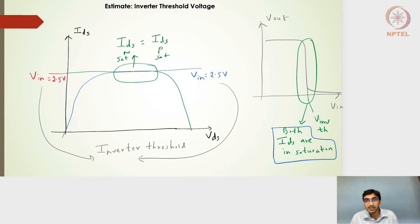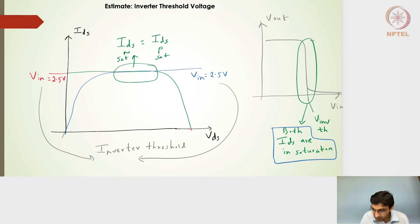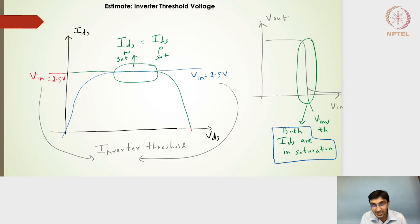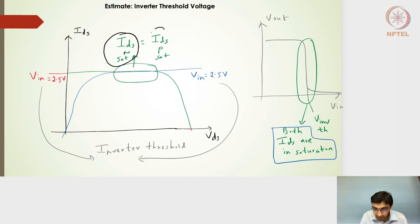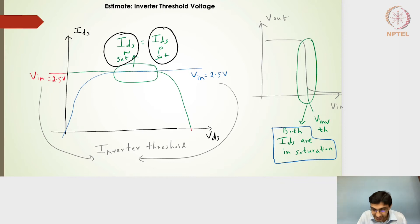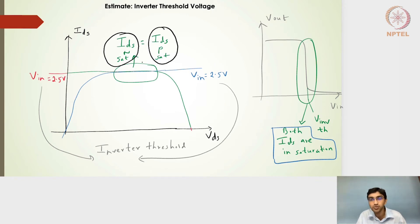Now we need to estimate this threshold voltage — can we find an expression that defines it? The threshold voltage corresponds to the series of intersection points where both the NMOS and PMOS currents are in saturation. That means the saturation current of the NMOS must match the saturation current of the PMOS. This series of intersection points defines the transition region and the inverter threshold voltage.